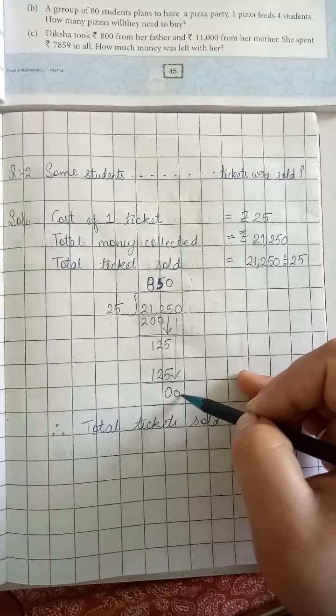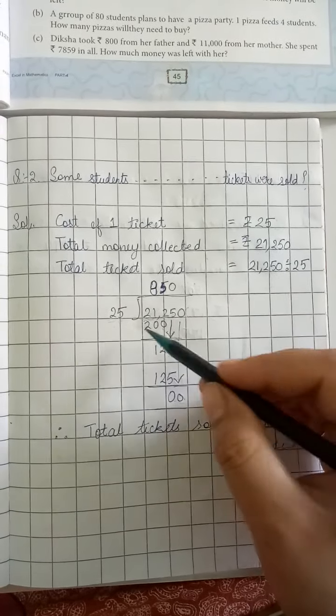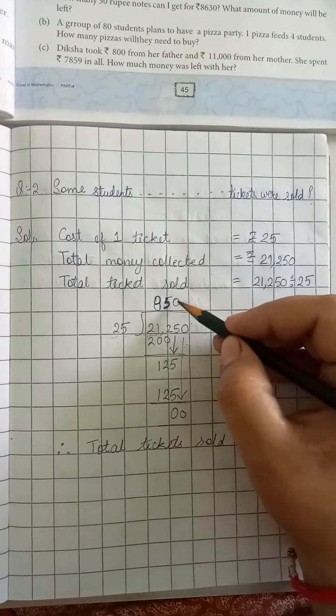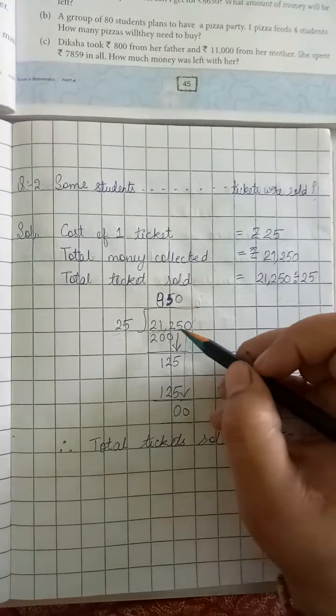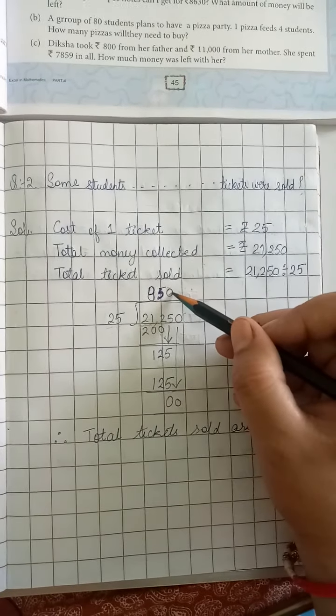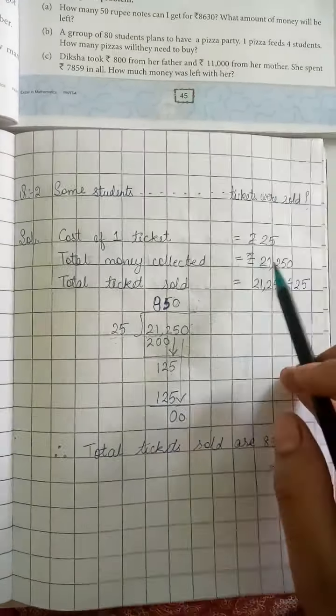But we are left with one zero here. We cannot divide it with 25, so here we will write zero. Don't forget to write this zero, otherwise your division will be incorrect.